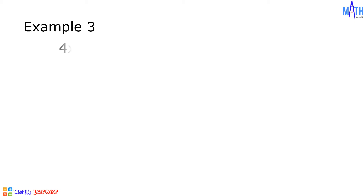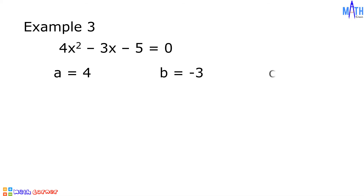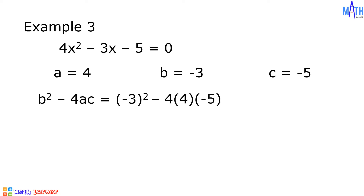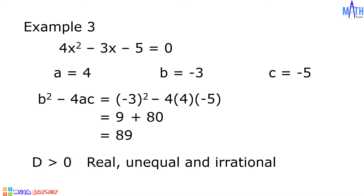Example number 3: 4x squared minus 3x minus 5 is equal to 0. In this quadratic equation, a equals 4, b equals negative 3, and c equals negative 5. B squared becomes the square of negative 3, minus 4ac becomes minus 4 times 4 times negative 5. The square of negative 3 is positive 9. Negative 4 times 4 is negative 16; negative 16 times negative 5 is positive 80. So 9 plus 80 equals 89. Since the discriminant is greater than 0 but not a perfect square, the roots are real, unequal, and irrational.